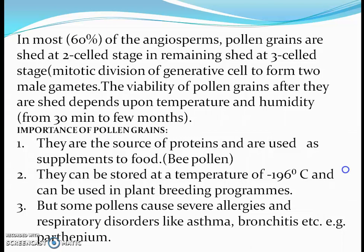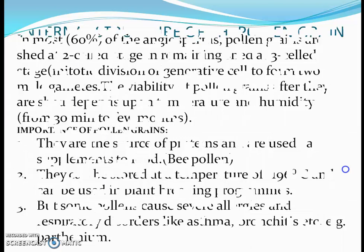Now regarding the importance of pollen grains: pollen grains are used as a source of proteins and supplements of food — bee pollen is also used. They can be stored at a temperature of minus 196 degrees centigrade in liquid nitrogen and can be used in plant breeding programs. However, pollen also causes allergies and respiratory disorders like asthma and bronchitis — for example, Parthenium.